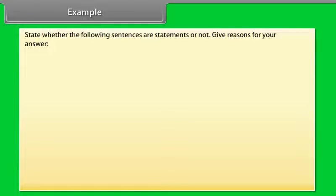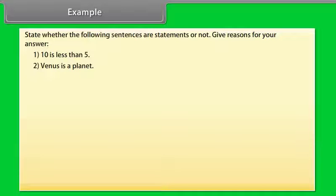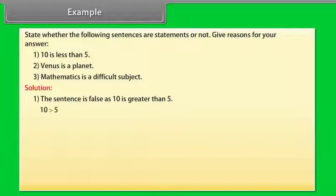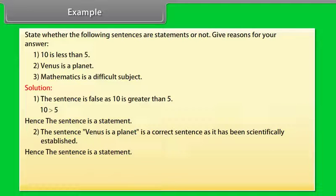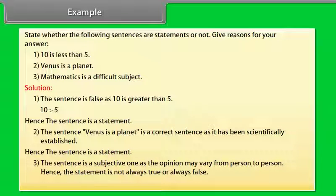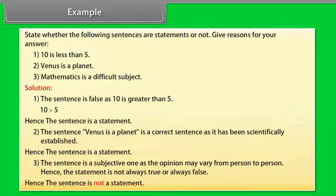Example: State whether the following sentences are statements or not, and give reasons. 1. 10 is less than 5 — the sentence is false as 10 is greater than 5, hence it is a statement. 2. Venus is a planet — correct as scientifically established, hence it is a statement. 3. Mathematics is a difficult subject — this is subjective and the opinion may vary from person to person, hence it is not always true or always false, so it is not a statement.